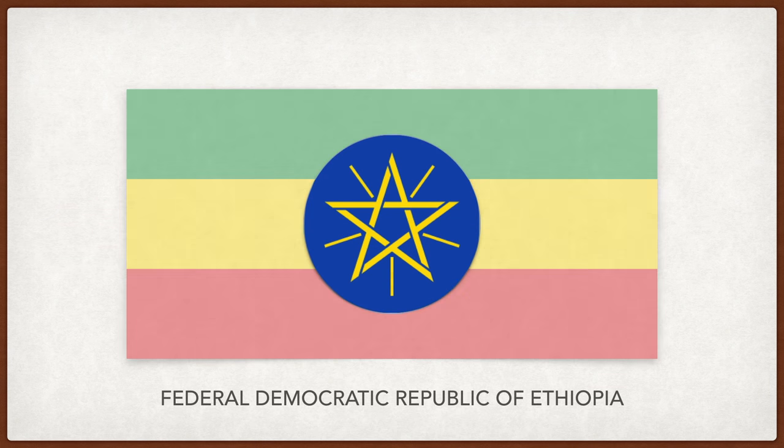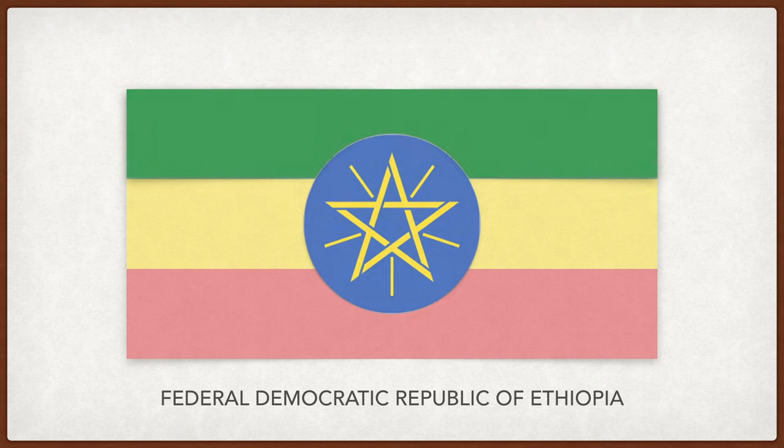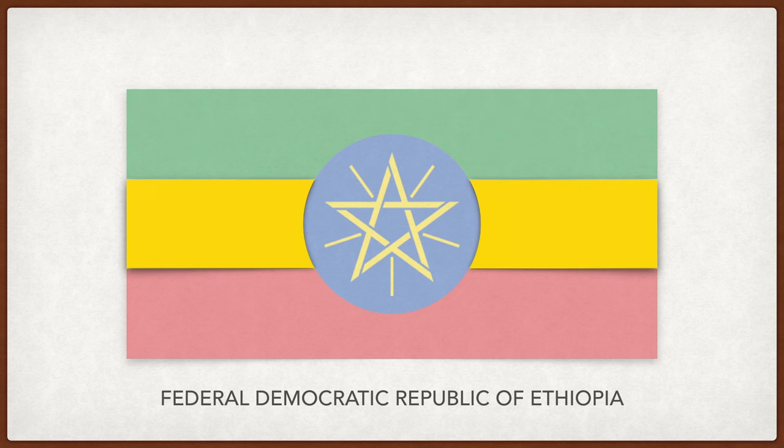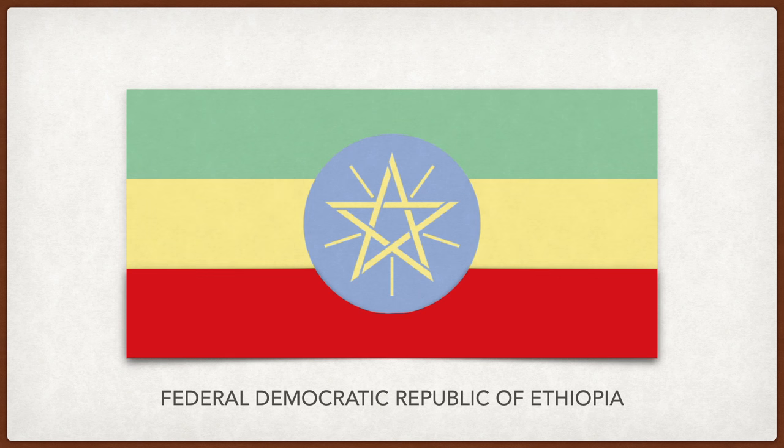Ethiopia. The blue circle represents peace. The star represents diversity and unity, and the red is prosperity. The green is for the land, the yellow is for peace and hope, and the red is for strength.